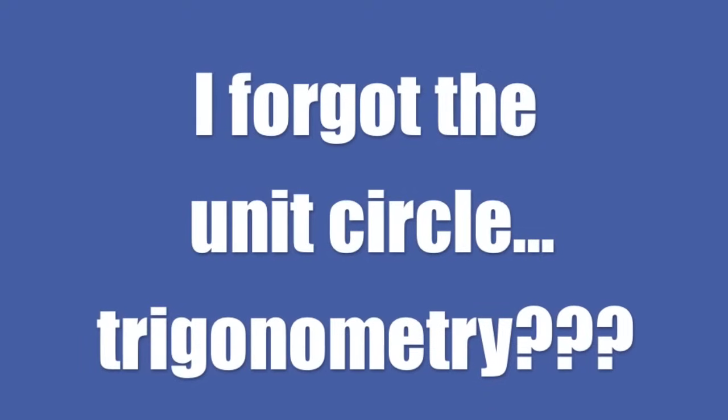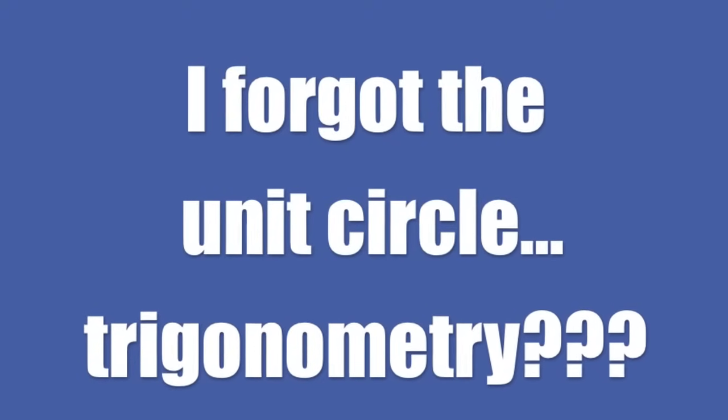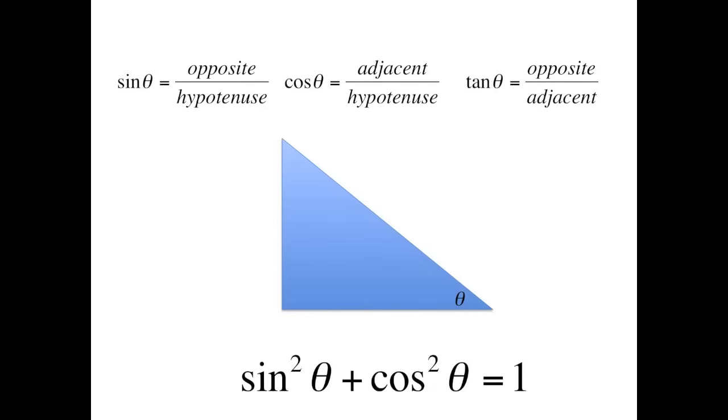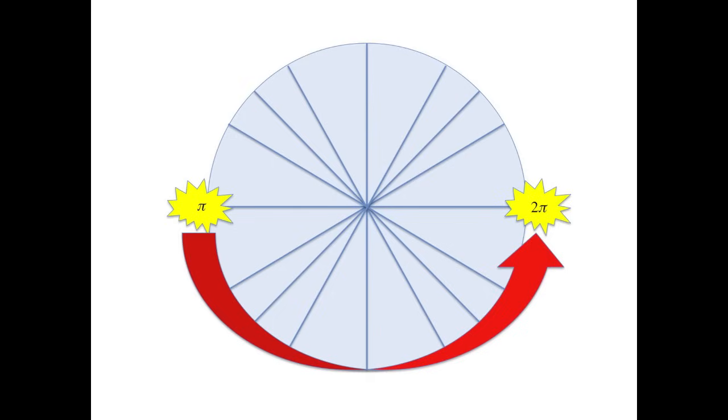I forgot the unit circle trigonometry. Sine, cosine, and tangent and those trig identities. I forgot the lower half goes from π and til to π. I forgot it all and that's no lie.